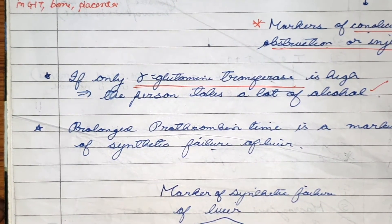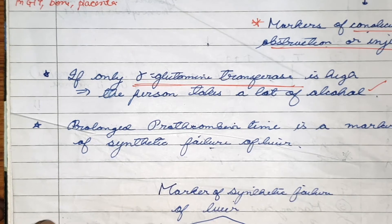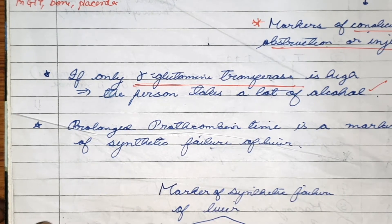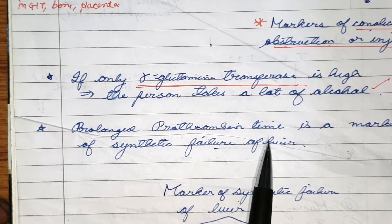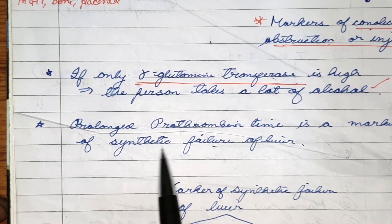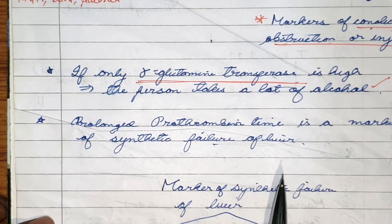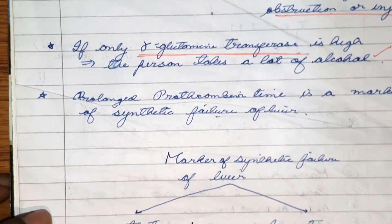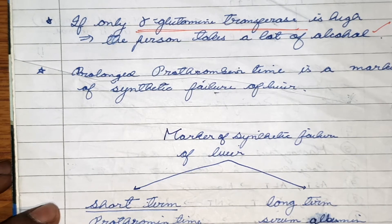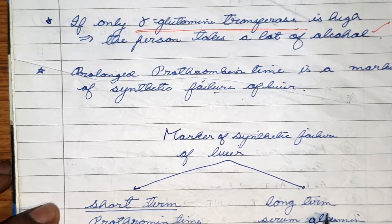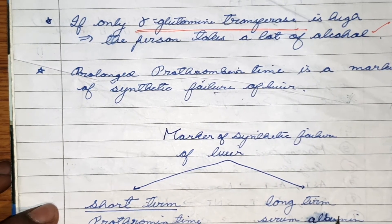If the liver is damaged, there will be increased prothrombin time and loss of albumin. Prolonged prothrombin time is a marker of synthetic failure of the liver, meaning there is some damage to the liver. There are two markers for synthetic failure: for short term it is prothrombin time, and for long term it is serum albumin.